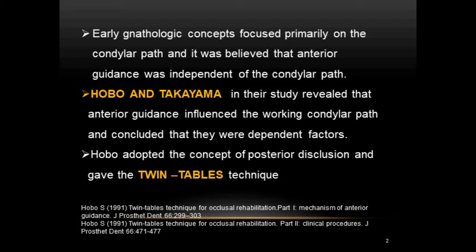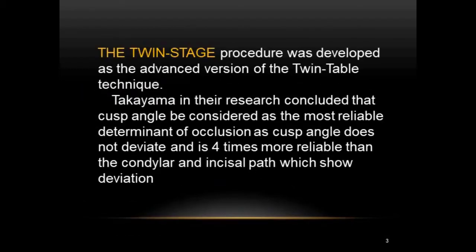The twin stage procedure was considered an advanced version of the twin table technique. Takayama and Hobo concluded that cusp angle was the most reliable determinant of occlusion, as it does not deviate and was found to be four times more reliable than the condylar and incisal path. The twin stage procedure will be discussed in our coming session; today we will focus on the twin tables technique.